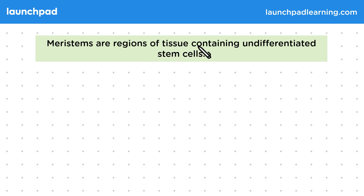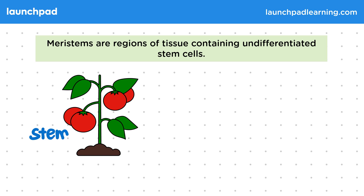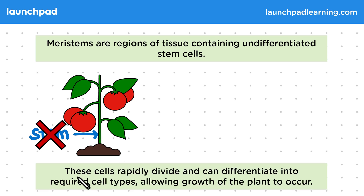Meristems are regions of tissue containing undifferentiated stem cells. When referring to the stem cells, we're not talking about the stem of the plant — we mean stem as in the start of something. These cells rapidly divide and can differentiate into required cell types, allowing growth of the plant to occur.